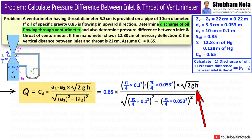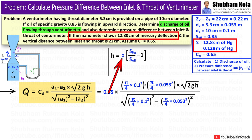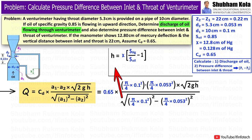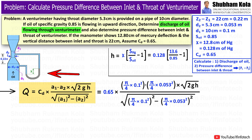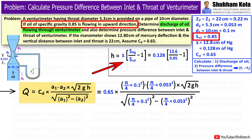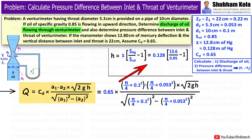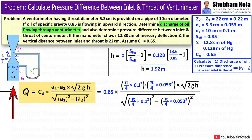We also need to calculate small h, which is the pressure difference between inlet and throat. Small h can be calculated using the manometric reading x, which is 0.128 m. The formula is: h equals x times (specific gravity of heavier fluid divided by specific gravity of lighter fluid, minus 1). Here the heavier fluid is mercury with specific gravity 13.6, and the lighter fluid is oil with specific gravity 0.85. Using these values, small h equals 1.92 m of oil.